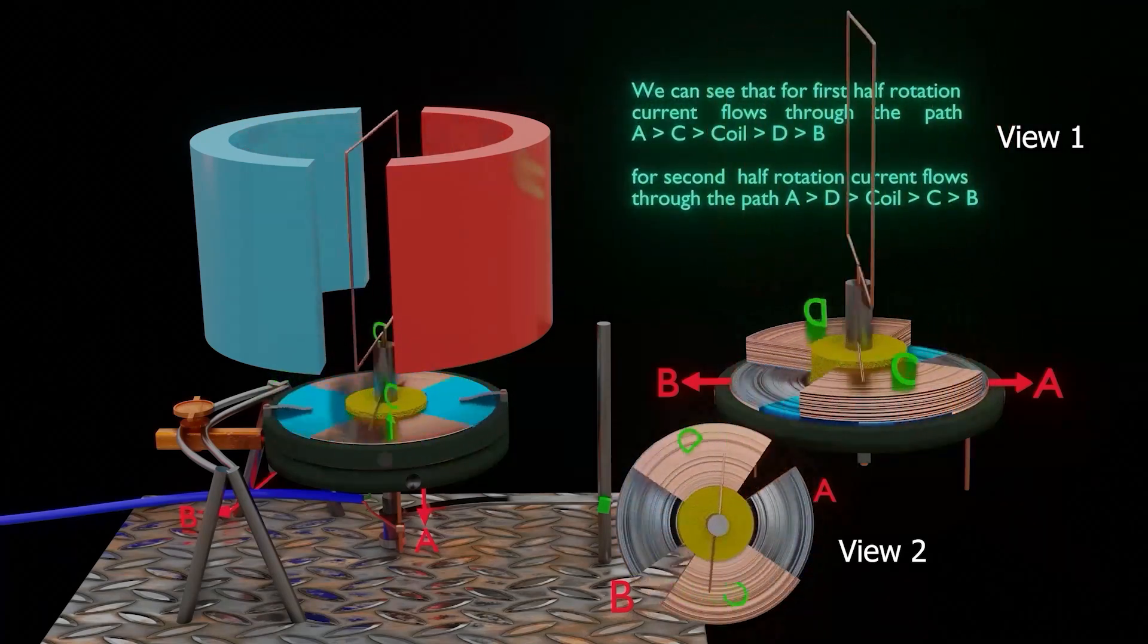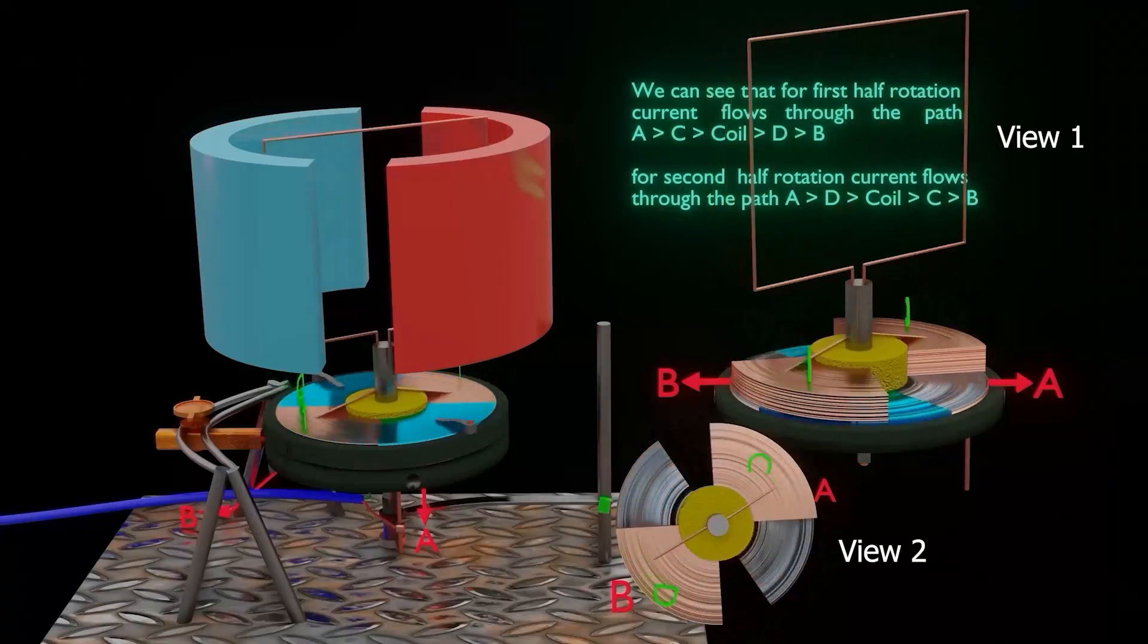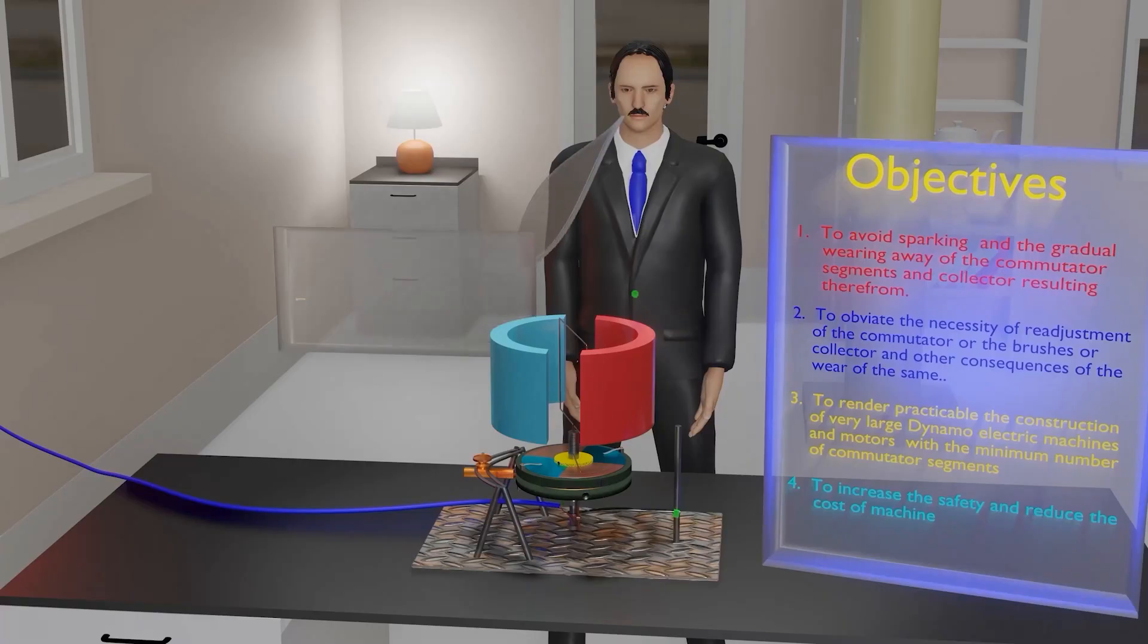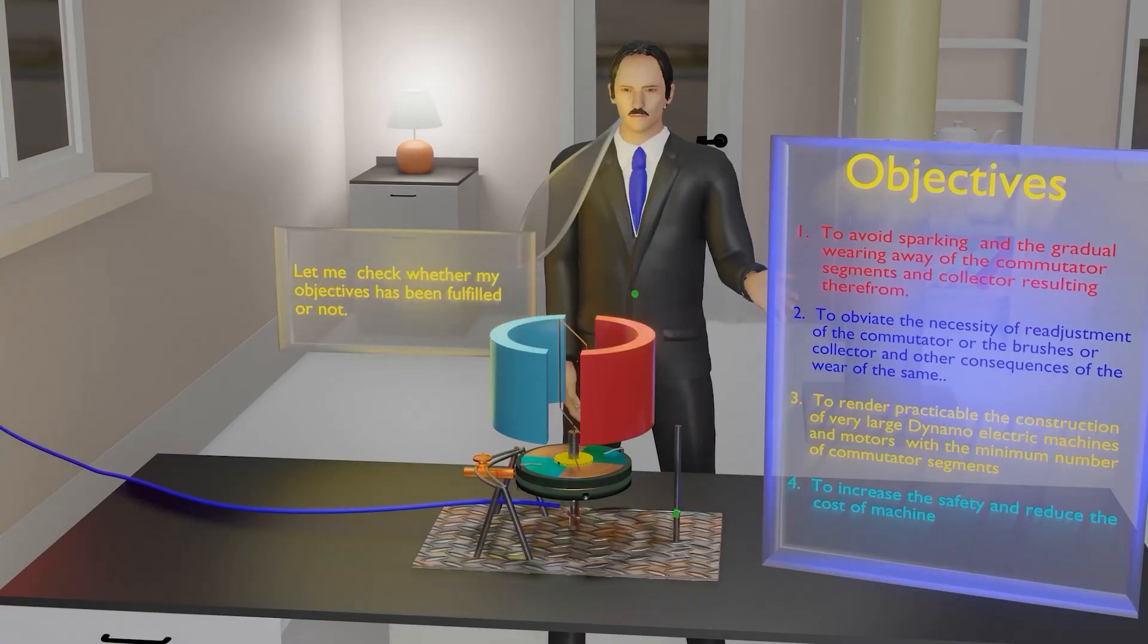In this way, Nikola Tesla was successful in making a new design of commutator for dynamo-electric machines or motors. Now, let's check whether the objectives of Nikola Tesla were fulfilled or not.